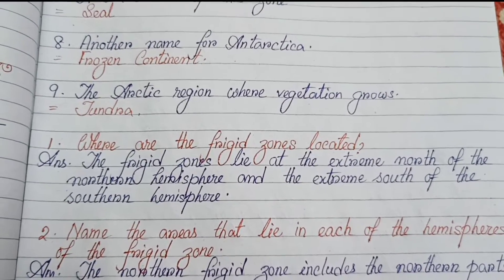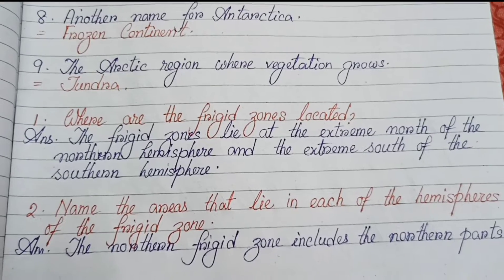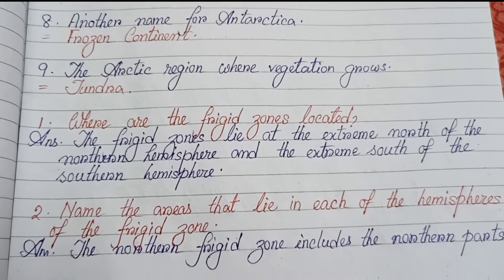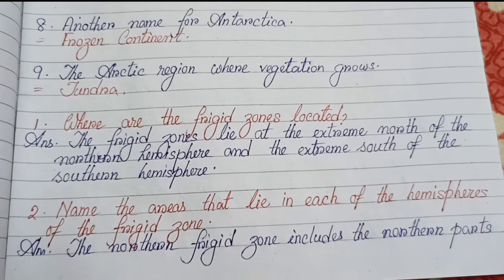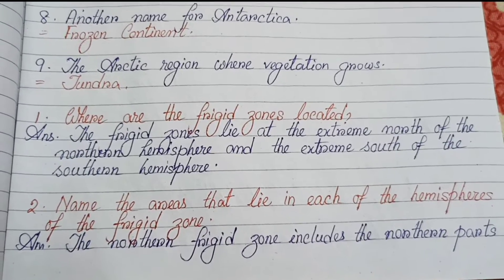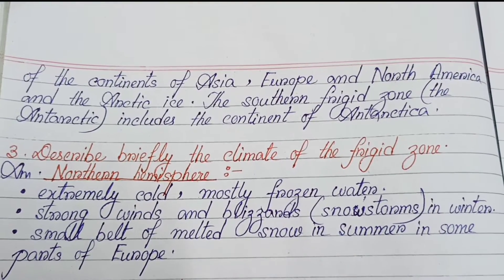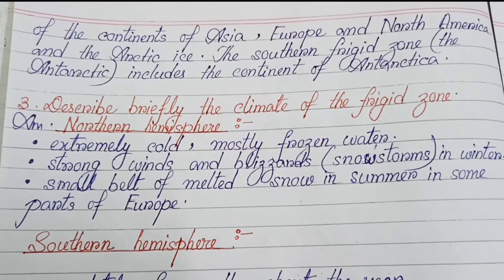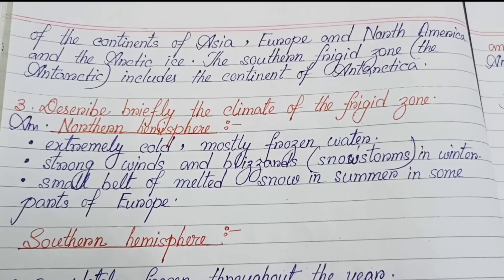Question answers. Number one: Where are the frigid zones located? The frigid zones lie at the extreme north of the northern hemisphere and the extreme south of the southern hemisphere. Number two: Name the areas that lie in each hemisphere of the frigid zone. The northern frigid zone includes the northern parts of the continents of Asia, Europe, and North America, and the Arctic ice. The southern frigid zone — the Antarctic — includes the continent of Antarctica.